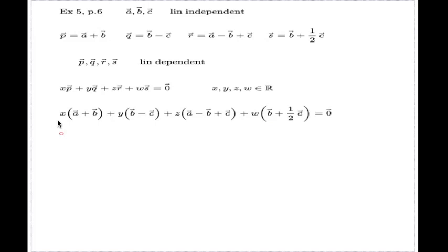The A vector comes with the coefficient x here and with the coefficient z here. That's all appearances of the A vector. So the combined coefficient of A will be this.